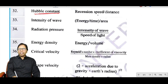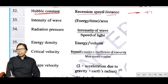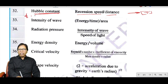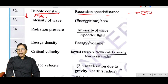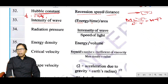Hubble constant equals recession speed divided by distance (LT⁻¹/L = T⁻¹), having the same dimension as frequency. Intensity equals energy divided by (time × area): ML²T⁻² ÷ (L² × T) = MT⁻³.